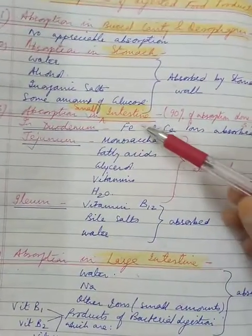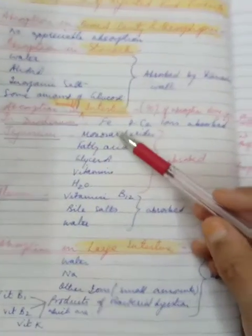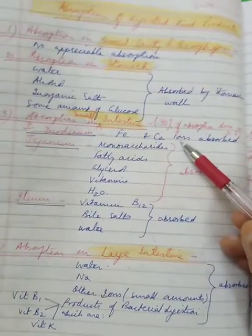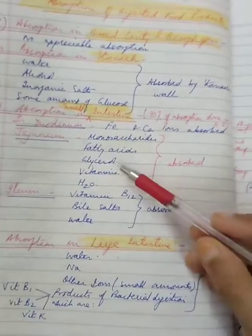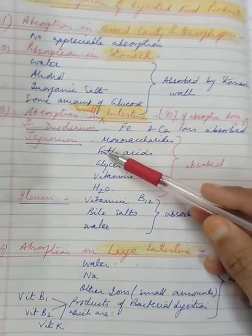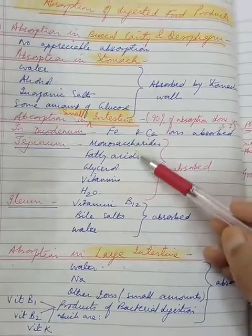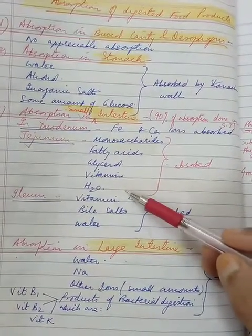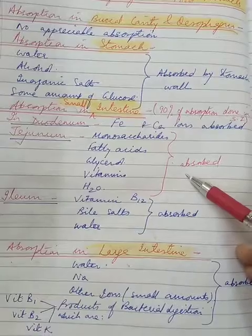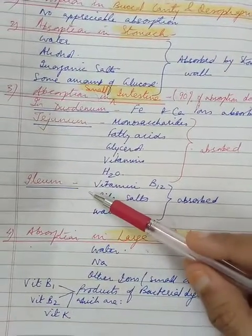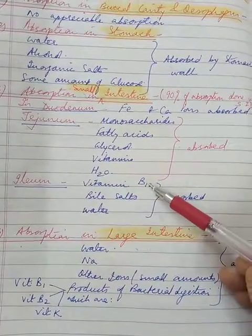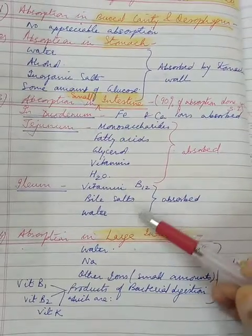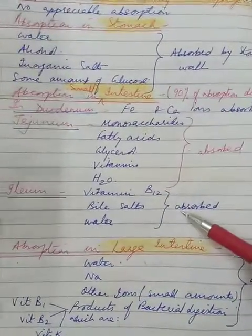So what happens in the small intestine? In the duodenum, iron and calcium is absorbed. Then in the second part, that is jejunum, monosaccharides, fatty acids, glycerol, vitamins and water are absorbed. Then as the food reaches the ileum, vitamins like vitamin B12, bile salts and water, they are absorbed.